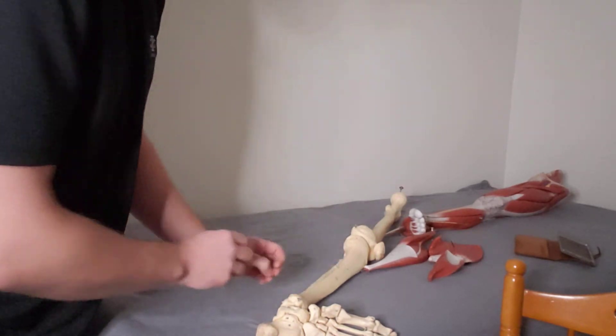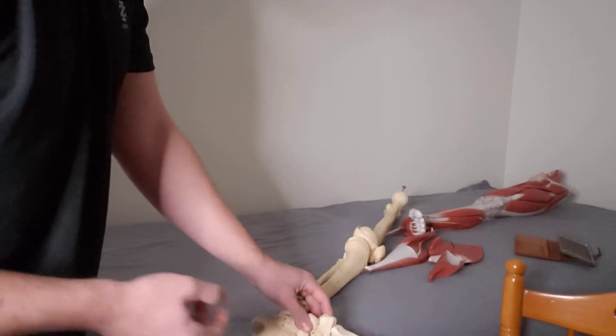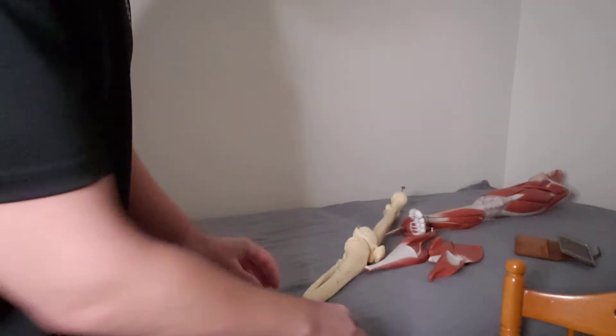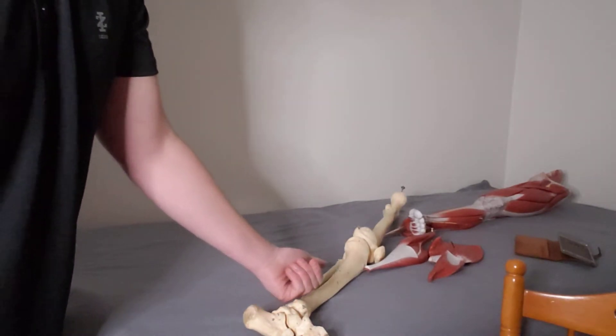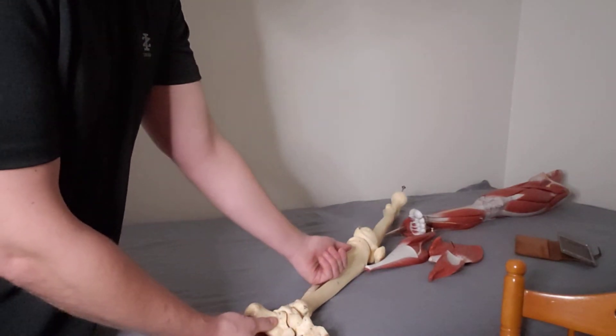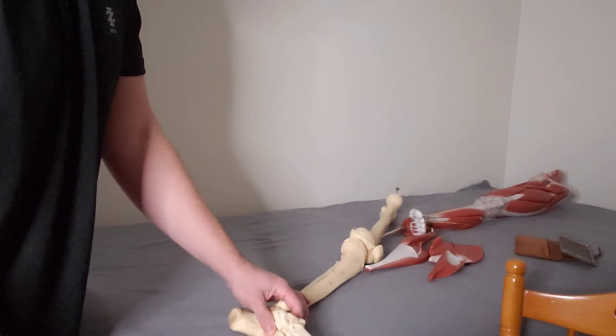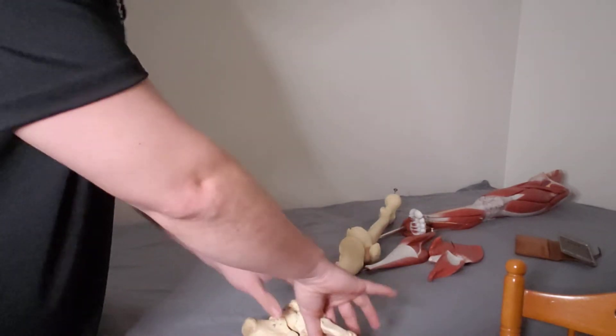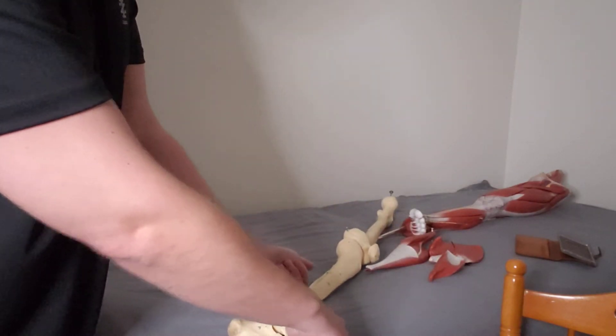all those muscles that are underneath the Achilles: tibialis posterior, flexor hallucis, flexor digitorum. I will use a soft fist to glide, work my way all the way up. But if I'm going to include some joint movement, I can just grab literally the arch of the foot and move it back and forth as I'm compressing and gliding.